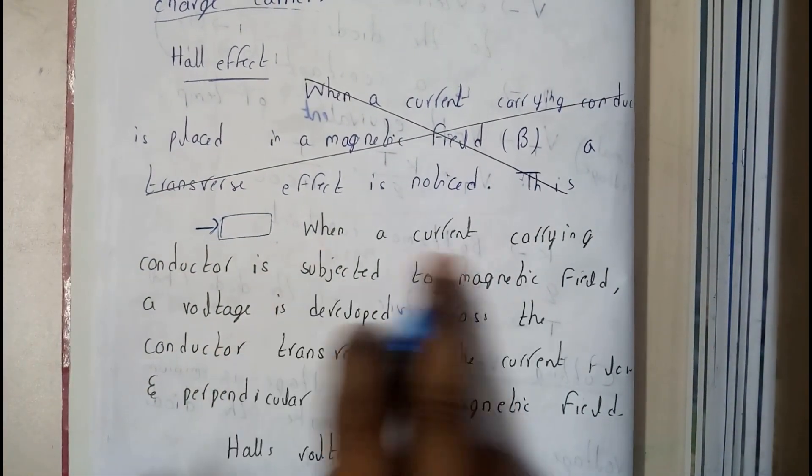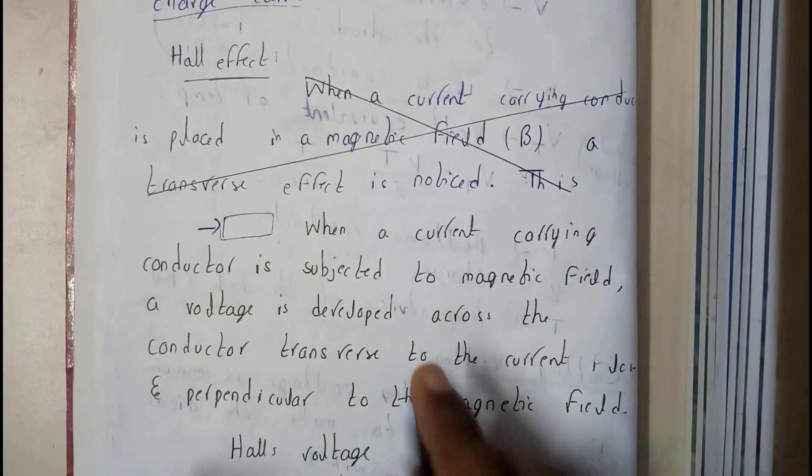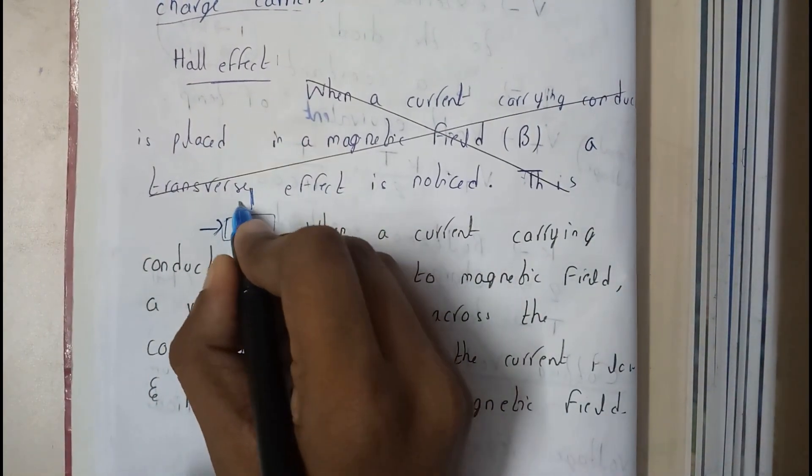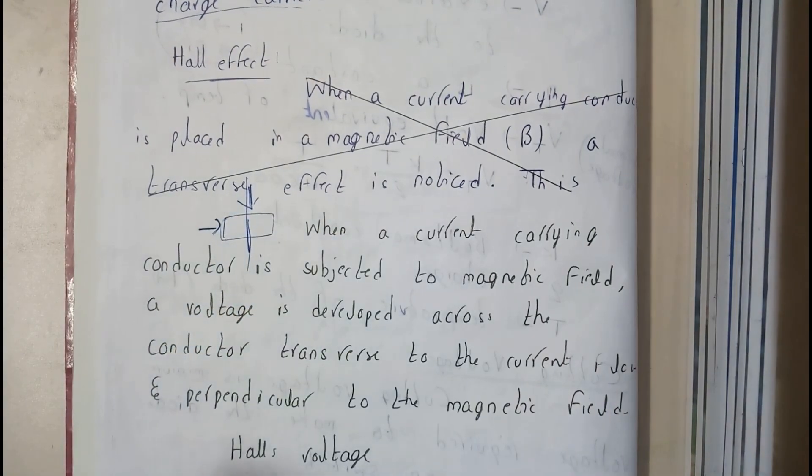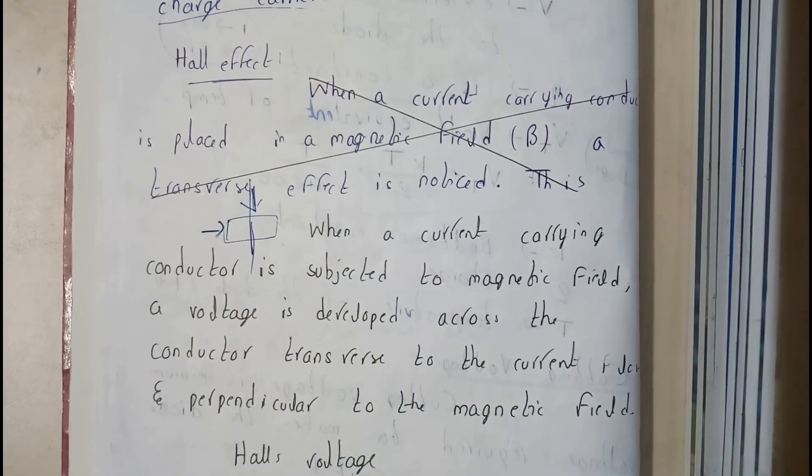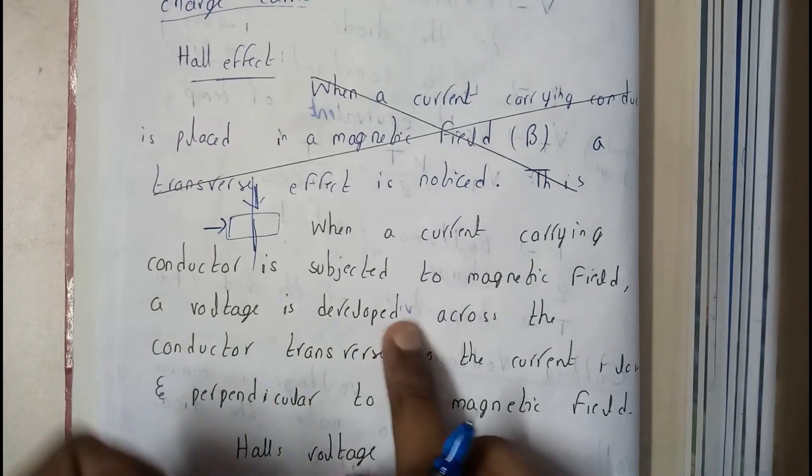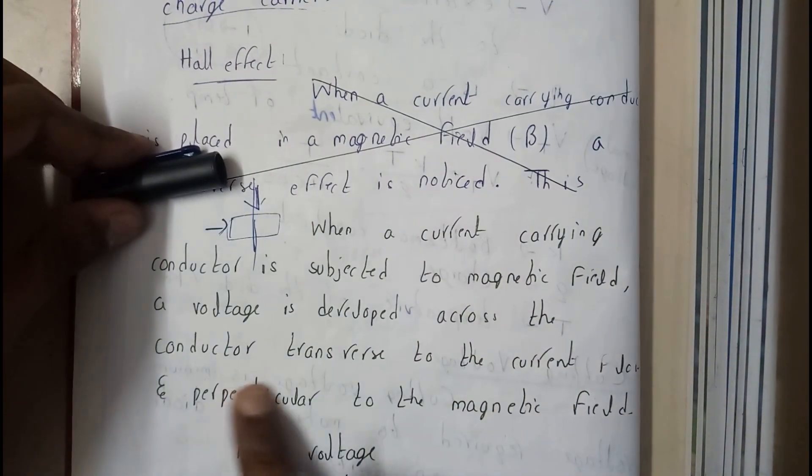When a current carrying conductor is subjected to a magnetic field, let us assume these both are perpendicular and the magnetic field is like this, up to down or down to up. Then a voltage is developed across the conductor.